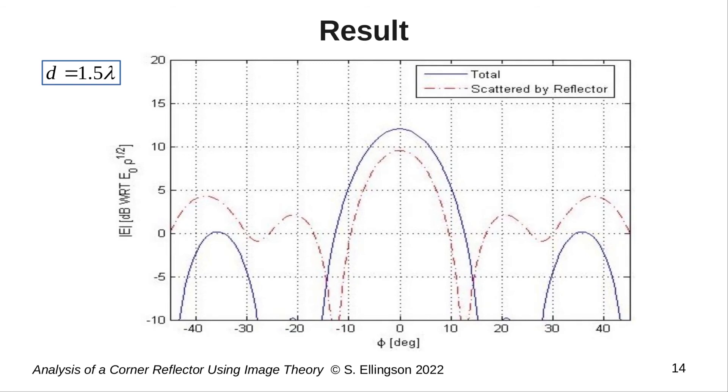Now, that red curve, that's simply the three line sources, i.e. not including the feed, that model the reflector scattering. I included that merely to emphasize my previous comment, that here, the feed direct radiation does play a significant role in the far field pattern of this antenna.